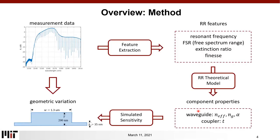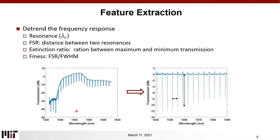The method we will use for developing the process variation distribution map is that we start with the measurement data, from which we extract some of the features of the ring response parameters. We then use these parameters to further calculate some of the ring properties, which we compare with the nominal case in order to extract the geometric variation. To go into more detail, we start with the feature extraction.